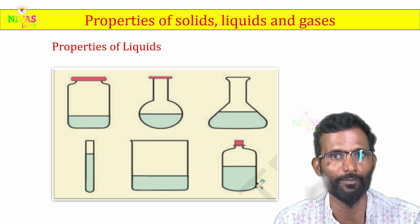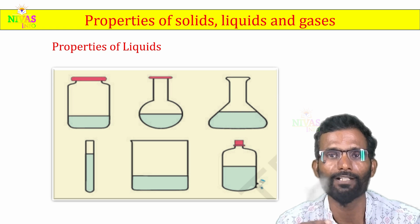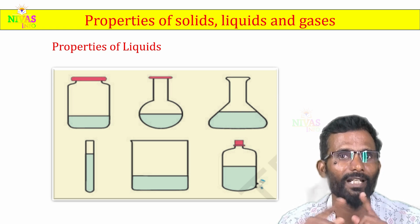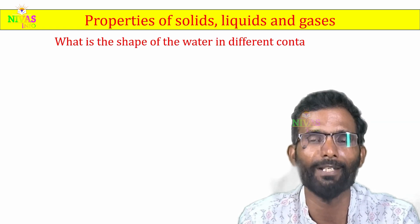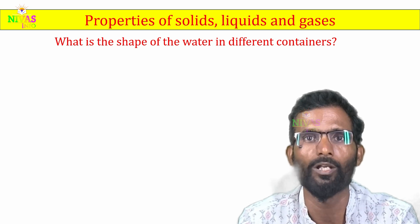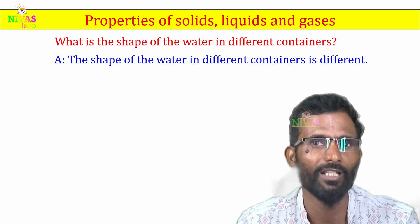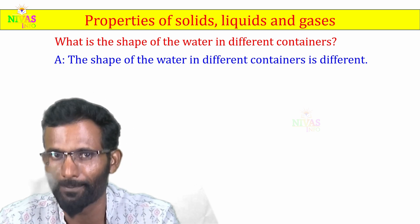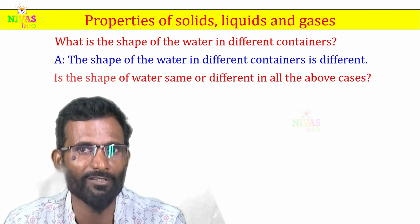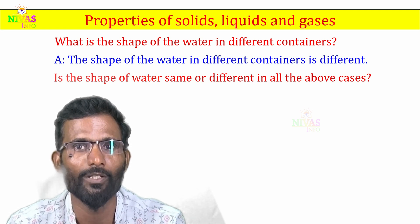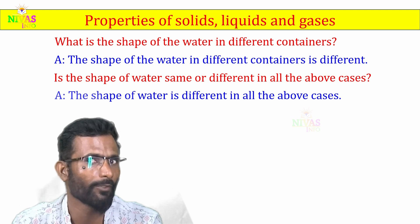Different types of containers can be filled with liquids. The liquid takes the shape of the container — in different jars, the same liquid changes shape. But the volume of the liquid remains the same. The shape of the water is different in all the above cases.